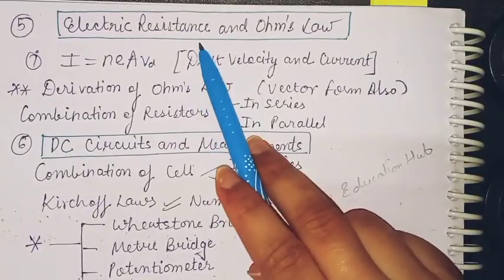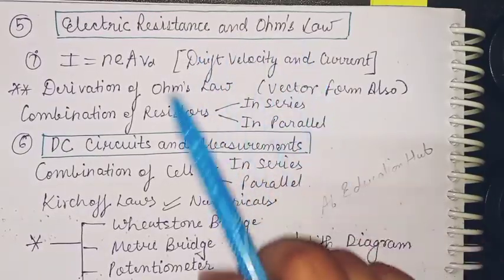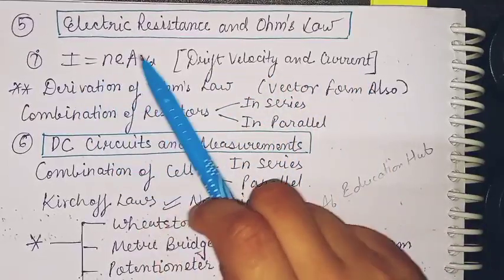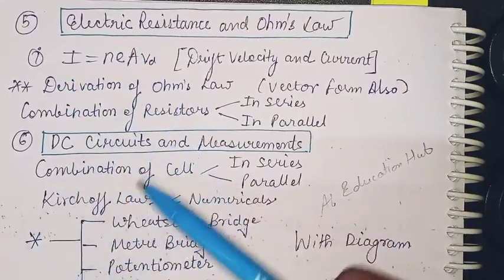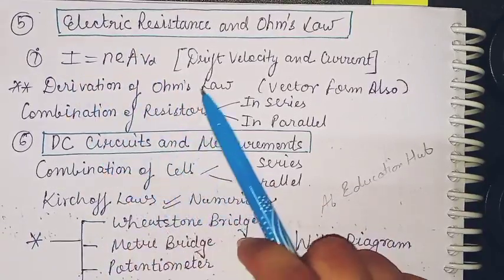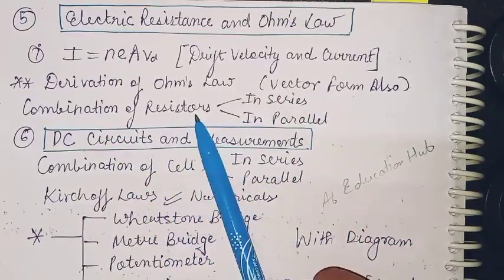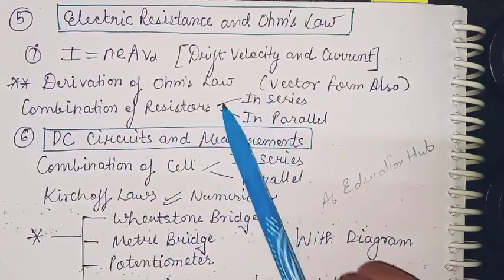Coming to electric resistance and Ohm's law: the relation between drift velocity and current, that is I equals nAeVd. This derivation may also come. Then derivation of Ohm's law - you must also do it in vector form. Combination of resistors, that is in series and parallel.